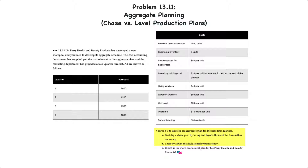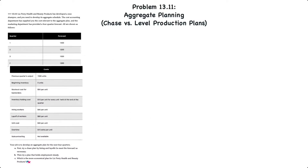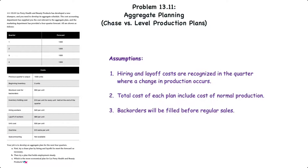Our objective is to develop an aggregate plan for the next four quarters: requirement A using a chase plan by hiring and layoffs to meet the forecast as necessary, and then B a plan that holds employment steady. If you've watched the previous aggregate planning videos relating to problems 13.3 through 13.6, this one is slightly different because we're dealing with quarters versus months. The hiring and layoff costs will be recognized in the quarter rather than the previous month.